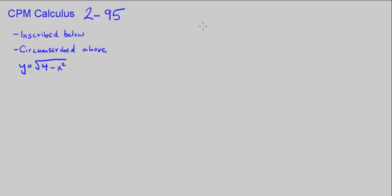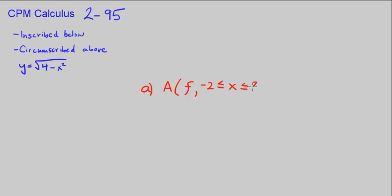This is CPM Calculus Chapter 2, Number 95. We're told inscribed rectangles are below a curve and circumscribed rectangles are above a curve. We're given the function y equals the square root of 4 minus x squared and told to complete the following problems. Part A is basically saying calculate the area under the curve using 4 inscribed rectangles, approximating it from x equals negative 2 to x equals 2.